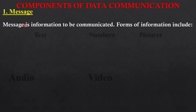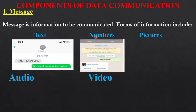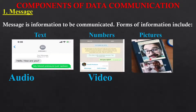Message is information to be communicated. For example, on WhatsApp if I want to communicate with my friend I have to send the message. Message can be in the form of text, like 'hello, how are you.' Text is considered as one type of message. The message can also be a number — you can share a number with your friend. You can also share pictures or images, which is also called one form of message.